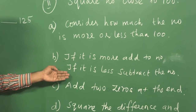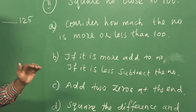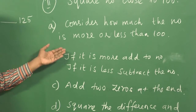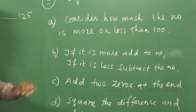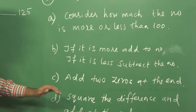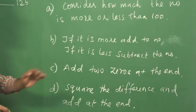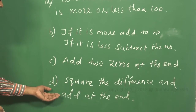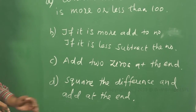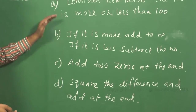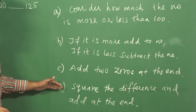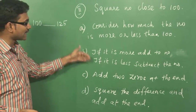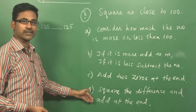The procedure is: whatever the difference is — if it is more, add it to the number; if it is less, subtract it from the number. Then add two zeros at the end. The last step is to square the difference and add it at the end. While solving the problem you can clearly understand what the procedure is about.